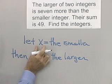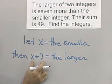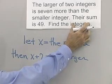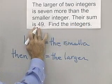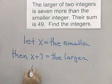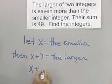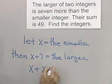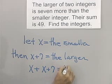So I have my two integers. One is x. The other is x plus 7. And then I reread the problem and see that their sum is going to be 49. So their sum is what I get when I add them together. So x plus x plus 7 is equal to 49.